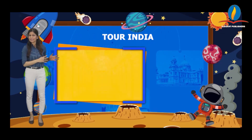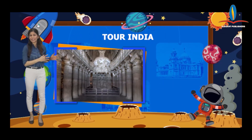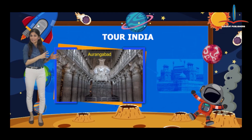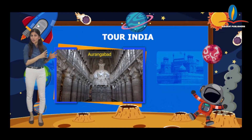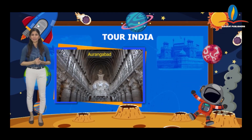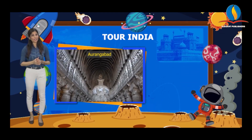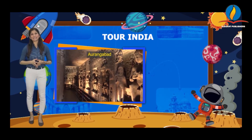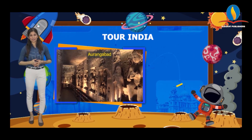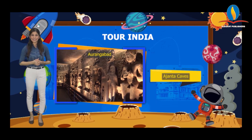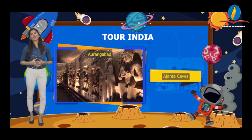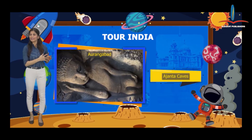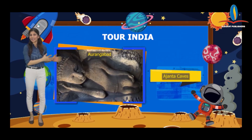Next, it is a kind of cave, and this cave is in Aurangabad. And where is Aurangabad? Yes, it is in Maharashtra. So the place is Ajanta Cave. We will write Ajanta Cave.